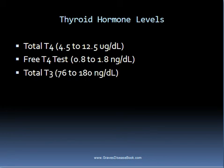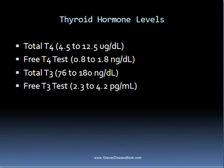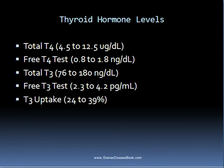Total T3 is the total amount of triiodothyronine, and like T4, is usually increased in people with hyperthyroid conditions. Free T3, like Free T4, also measures the free form of the hormone, and is more accurate than measuring the bound levels of this hormone. T3 uptake measures the amount of thyroxin binding globulin, and increased levels are common in hyperthyroidism.